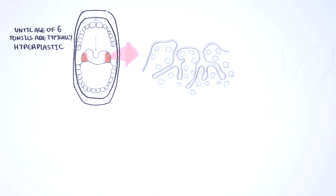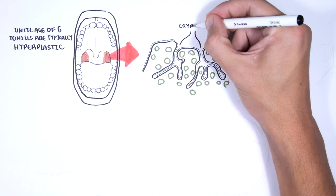The palatine tonsils have a strong rich blood supply from 5 different vessels. That is why there is a risk of a lot of bleeding with tonsillectomy.